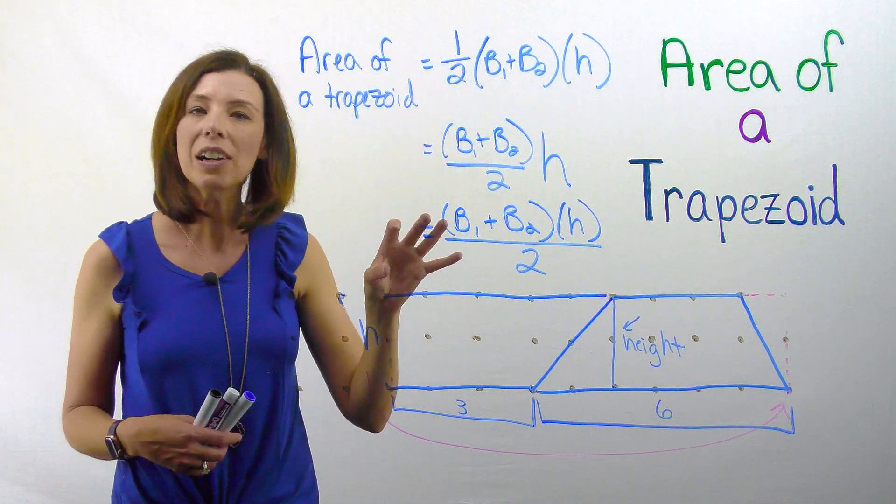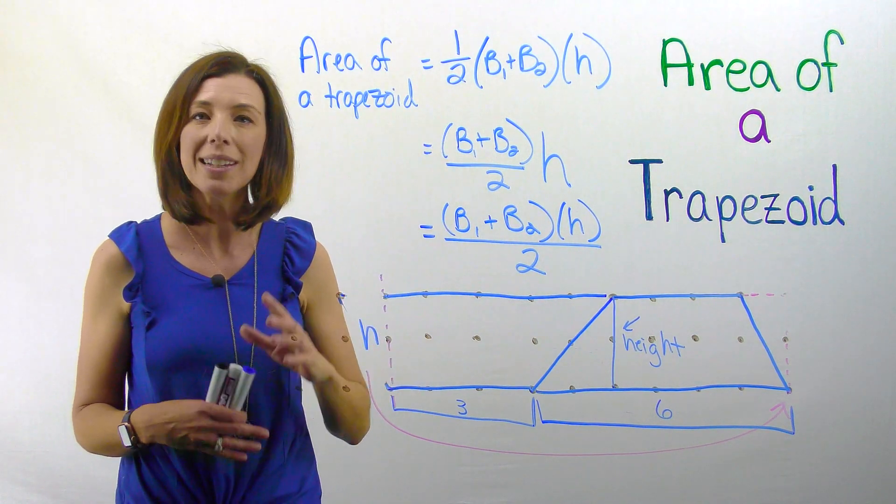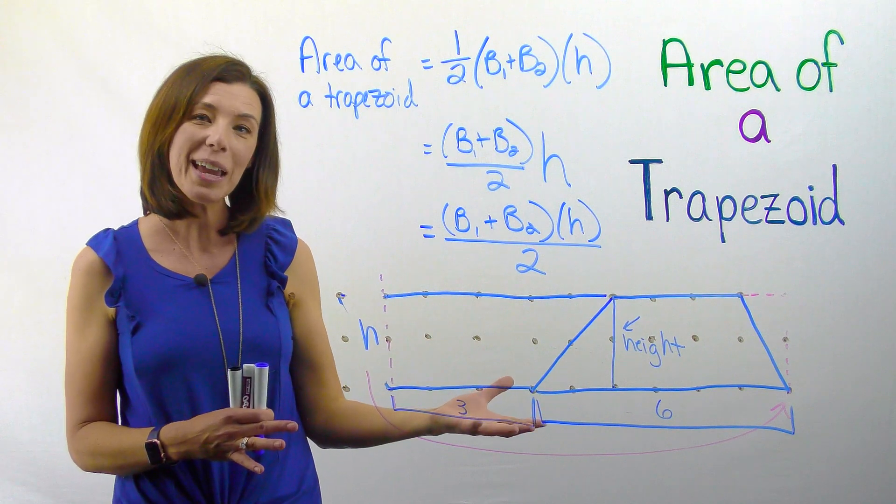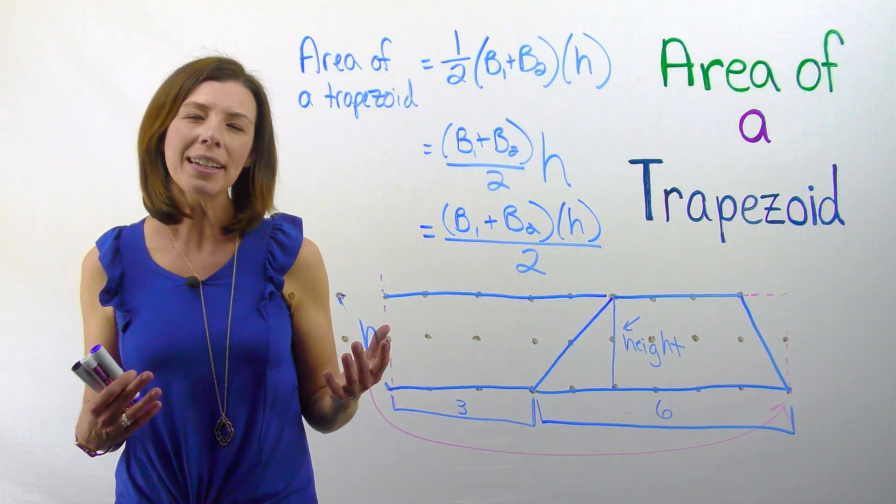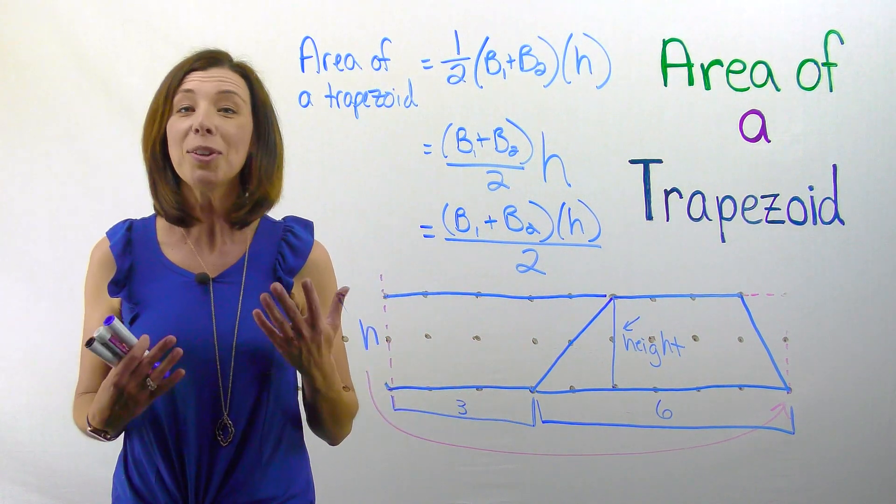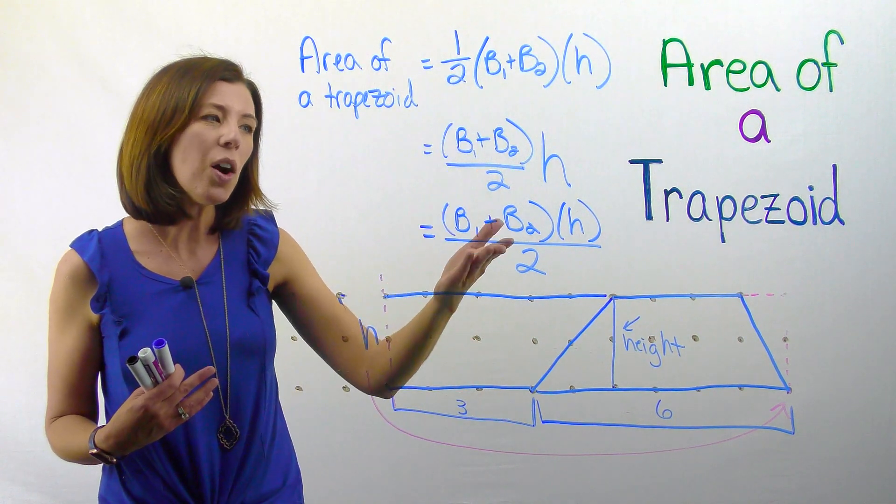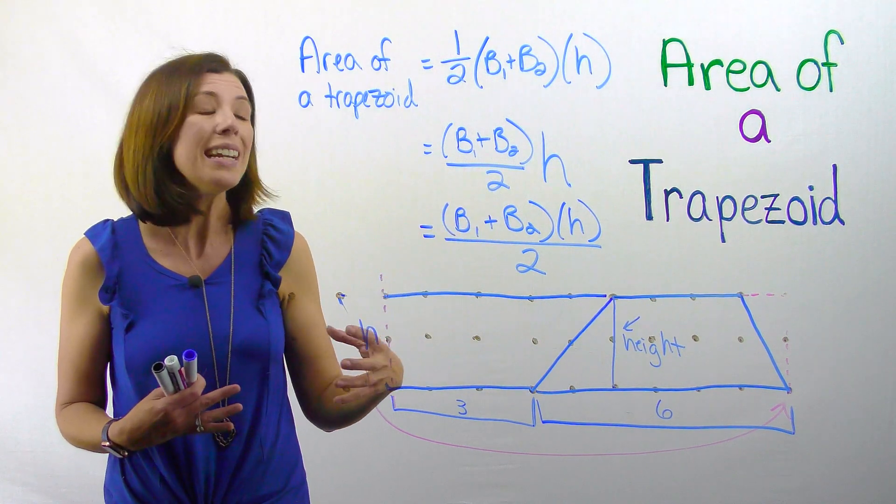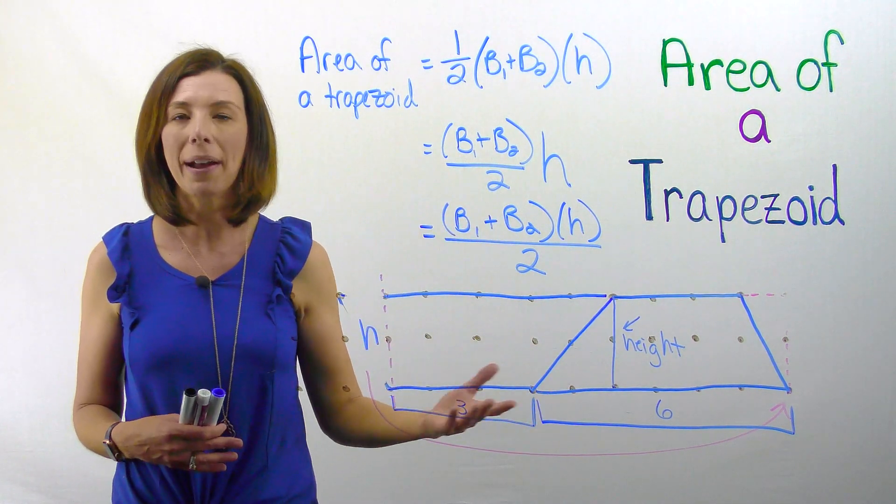So you might see area of a trapezoid written several different ways. If you understand where it came from, none of this should throw you off. Now you might be thinking to yourself, Marcia, area formulas, can't we just memorize them? You can, but look at how complicated this looks potentially if you didn't see that conceptual behind it.